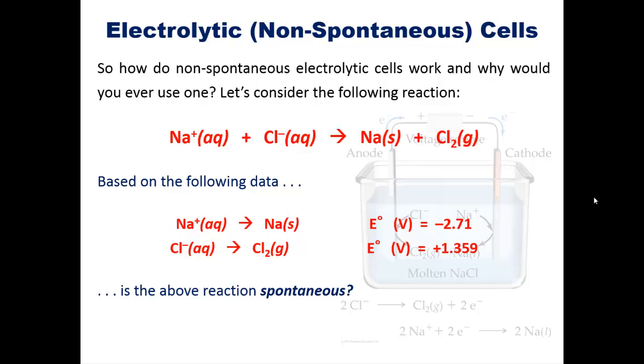And yet there still exist electrolytic cells industrially that do this. In other words, they push sodium cation and chloride anion energetically uphill to form sodium metal and chlorine gas. Because you're going energetically in a disfavored direction, this is not a spontaneous process and actually consumes energy. So why would you ever do it?